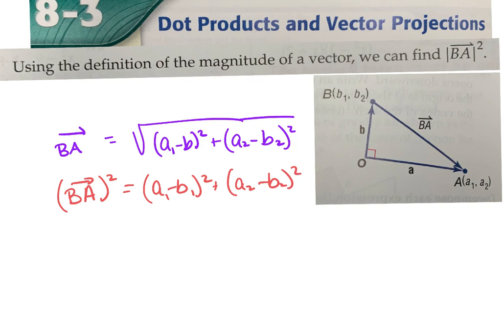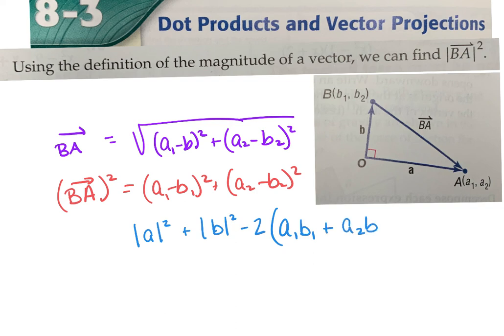They foil both of these expressions out — I'm not going to show all the foiling — and then they group the terms. You end up with the magnitude of A: when you foil, you get A1 squared plus A2 squared, and B1 squared plus B2 squared, which are your magnitude squared of each vector. Then there's a leftover piece — two times what happens when you multiply the X components and add it to the product of the Y components. That little piece from the foiling is your dot product. That's where dot product comes from — they get it from the Pythagorean theorem.